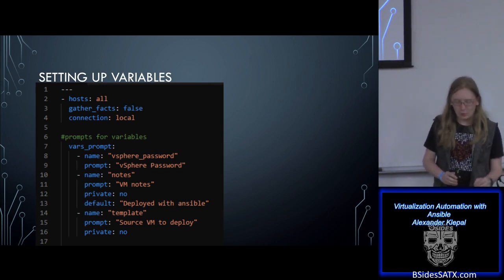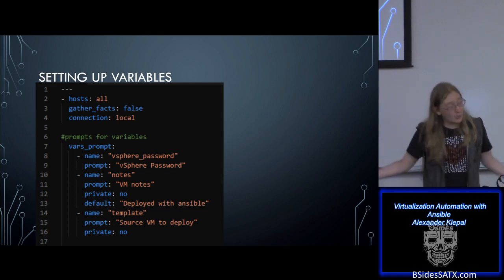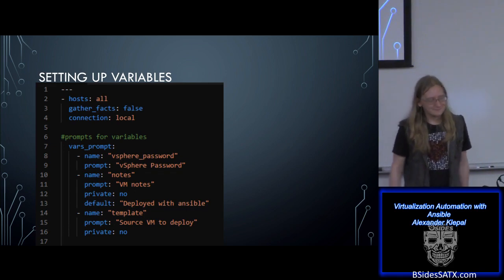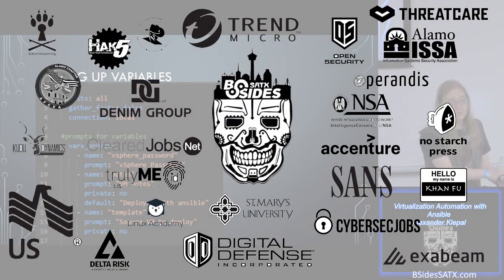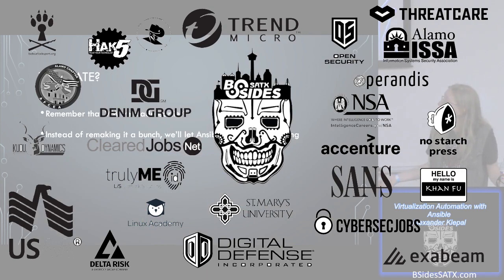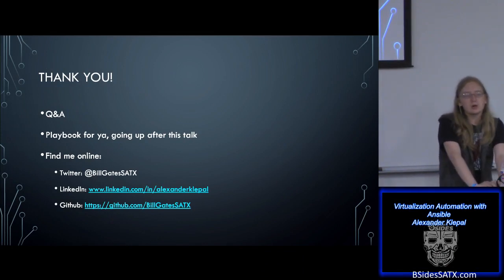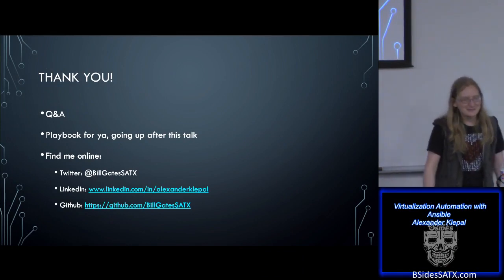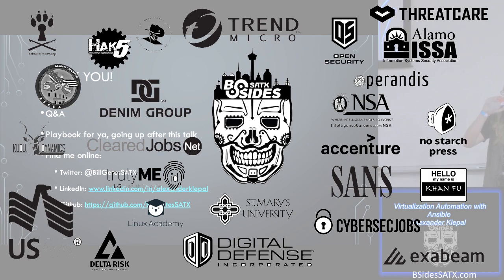Alright, I don't think there are any more questions — I totally blew through my slides. Thank you guys. I'll put up the playbook I used for deploying this range on my GitHub and post it on Twitter this evening. And for running over time, I'll also show you 'with_random_choice.' Thank you guys.